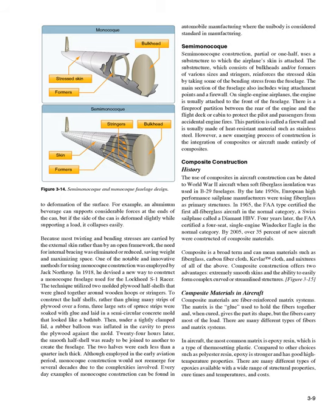Composite is a broad term and can mean materials such as fiberglass, carbon fiber cloth, kevlar cloth, and mixtures of all of the above. Composite construction offers two advantages: extremely smooth skins and the ability to easily form complex curved or streamlined structures.